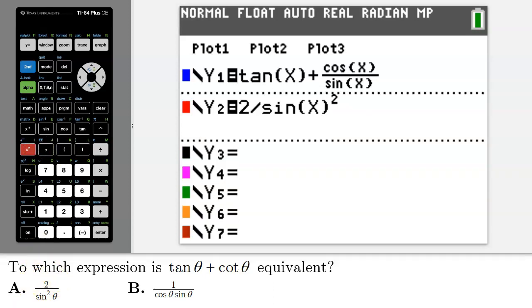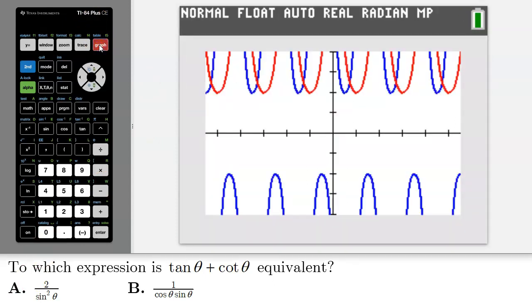Now I'll press graph and if A is in fact our answer I should see the red graph tracing directly on top of the blue graph and that is not the case. Therefore I know that tan theta plus cotangent theta is not equivalent to 2 divided by sine squared theta.